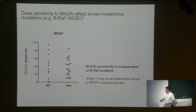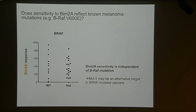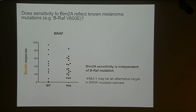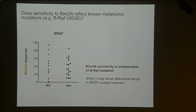Freya then went on to figure out whether, in the context of known common mutations in malignant melanoma, there's any correlation between sensitivity to BIM2A overexpression — in other words, MCL1 dependence — and mutation status. When she looked at whether cells were wild-type for BRAF or heterozygous carrying the V600E mutation, she really didn't see any correlation. At least at this level of analysis, that would suggest that MCL1 may be an alternative target for BRAF-mutated tumors, which from a clinical perspective is actually a very important observation.